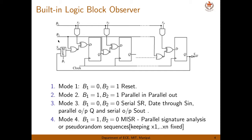Mode 4 has B1 equal to 1 and B2 equal to 0. With B1 equal to 1, the AND gates are enabled. With B2 equal to 0, the NOR gates are also enabled. In this configuration, the MUX selects the feedback path — SOUT feeds back — so we can perform two operations: parallel signature analysis or pseudo-random sequence generation.